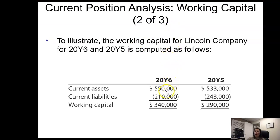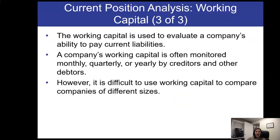In 2016, current assets of 550 minus current liabilities of 210 gives a working capital of 340,000 — an improvement over 2015. This working capital number, as well as other ratios, are often used by creditors. You might have a loan instrument that requires a certain working capital to be kept on hand, and lenders may monitor that periodically to ensure compliance. What is considered good working capital is relative — it depends on the size of the company and the norms for the industry and geographic region.